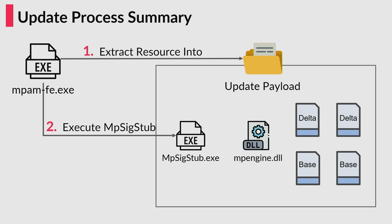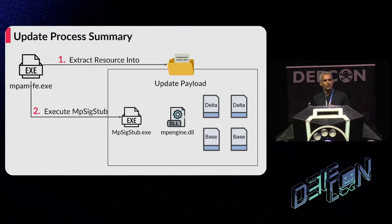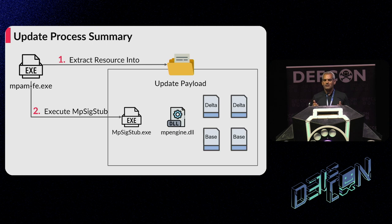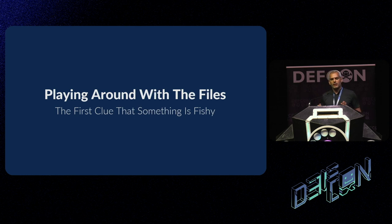To summarize the update process: the MPAM file is fetched from the internet, and upon execution it triggers an update in three steps. MPAM extracts the VDM files and MP6Tab from itself into the update payload folder located in the temporary directory. MPAM then executes MP6Tab to perform the update. Finally, MP6Tab takes the VDM files and MP Engine DLL and uses them to update Windows Defender. Now that we have high-level knowledge about the update process, we can start to play around with the files involved.